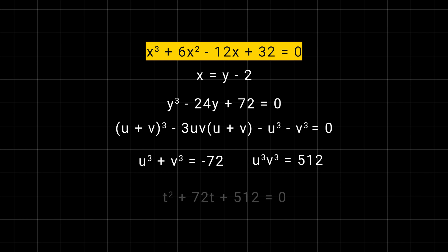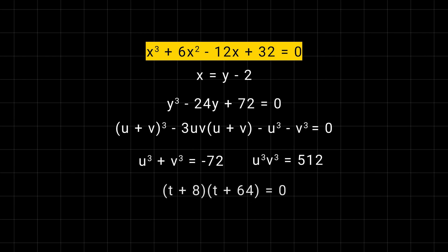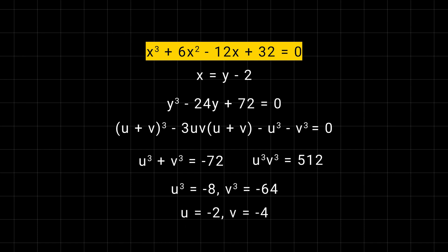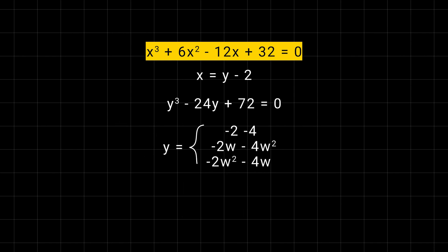Now we can write a quadratic equation whose roots are u cubed and v cubed: t plus 8 times t plus 64 equal to 0, giving t equal to minus 8 and minus 64. So we get u equal to minus 2 and v equal to minus 4. The roots of this equation are then found using x equal to y minus 2, or y equal to x plus 2.